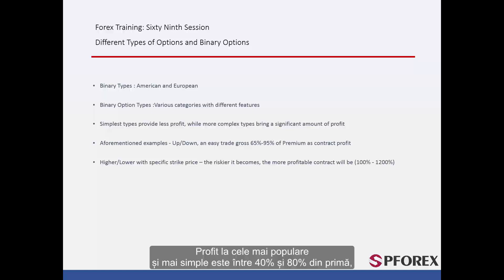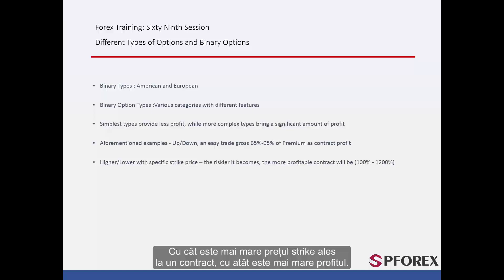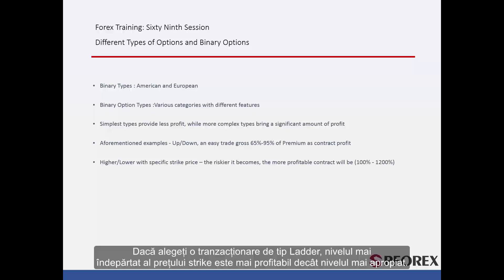Profit of the most popular and simplest binary options is between 40% and 80% of the premium, while the most complex ones may have profit over 500% of the premium. The higher the strike price you choose on a contract, the higher the amount of profit. For a ladder type of trading, a farther strike price level is more lucrative than a closer level.